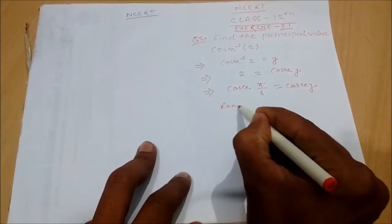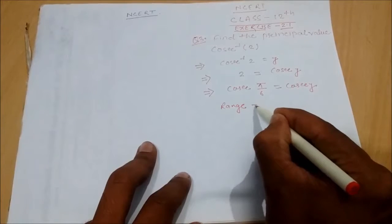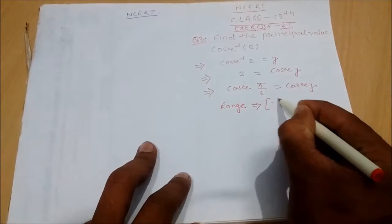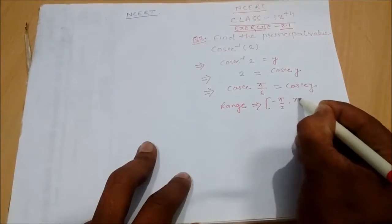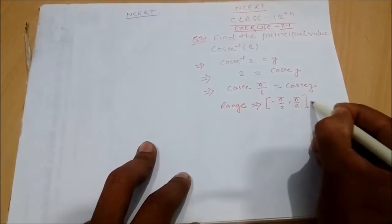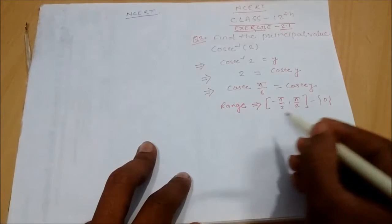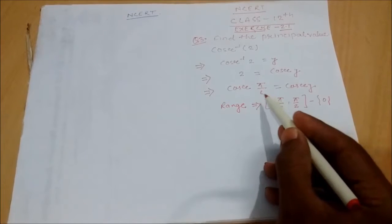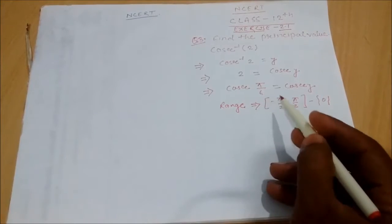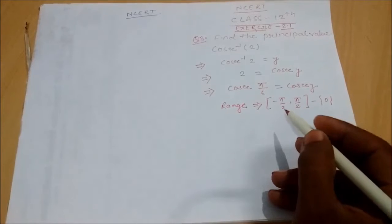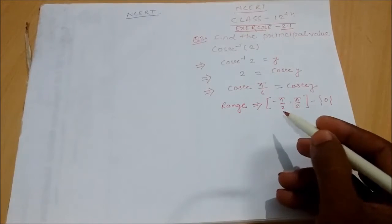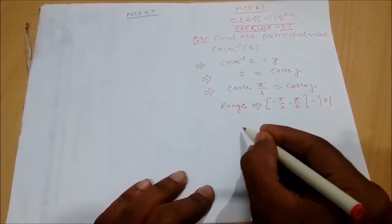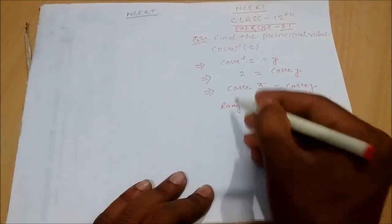Range. The range of cosec inverse. We need to check if π/6 is in the range. The range is 0 to π. We have to verify this for cosec inverse.